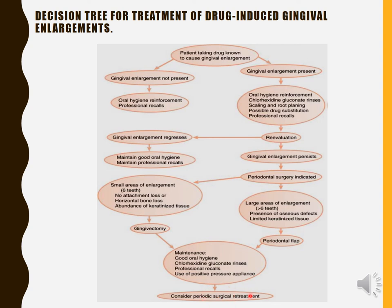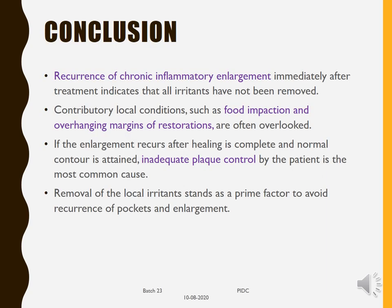Place the patient on maintenance therapy including good oral hygiene, chlorhexidine gluconate rinses, professional recalls, and use of a positive pressure appliance. Consider periodontal surgical retreatment if gingival enlargement recurs. In conclusion: recurrence of chronic inflammatory enlargement immediately after treatment indicates that all irritants have not been removed, so scaling and root planing must be thorough. Contributory local conditions such as food impaction and overhanging margins of restorations are often overlooked and must be corrected. Inadequate plaque control by the patient is a common cause of recurrence.